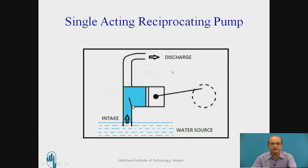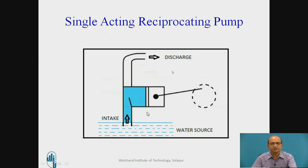Whenever the pump starts, the piston moves and water is sucked due to the pressure difference inside the cylinder. This is the working of the single acting reciprocating pump, which is basically used for very high pressure applications. The discharge may be lower compared to the centrifugal pump, but the pressure developed is very high. Wherever high discharge is required, a centrifugal pump can be used instead.